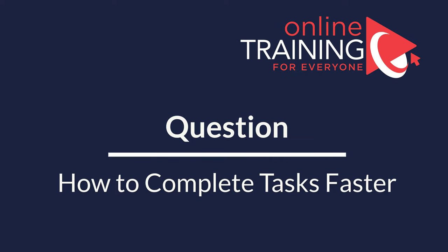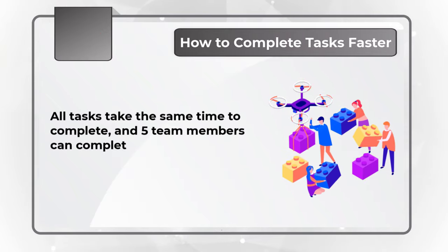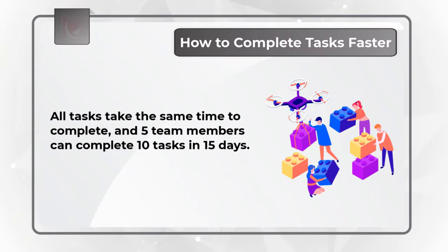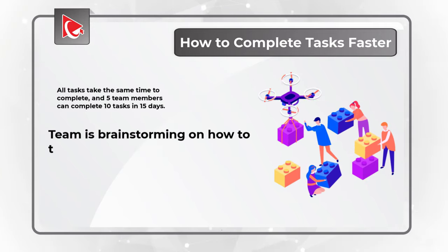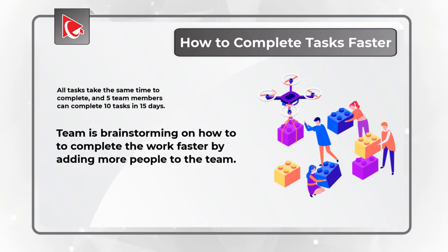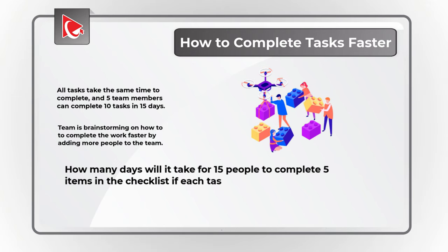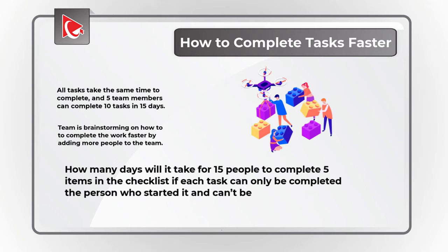Here's an interesting question which tests your knowledge of project management. A team is trying to decide how to complete tasks faster. All tasks take the same time to complete, and 5 team members can complete 10 tasks in 15 days. Currently, the team is brainstorming on how to complete the work faster by adding additional team members. How many days will it take for 15 people to complete 5 tasks on the checklist if each task can only be completed by the person who started it and cannot be delegated?